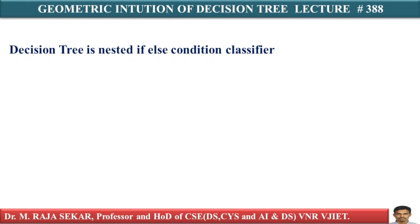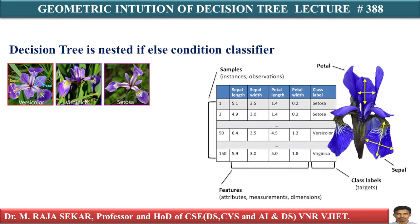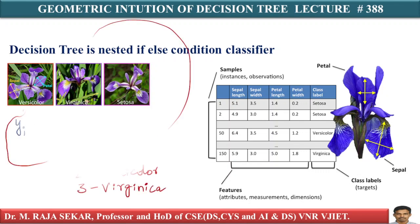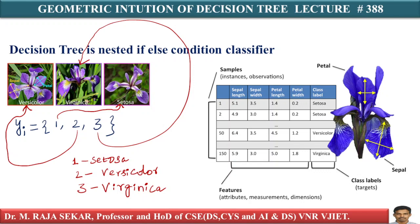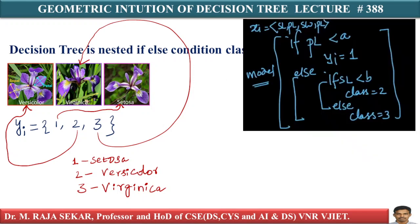Of course, there is a geometric interpretation to a decision tree. Let's take an example using the iris dataset. In the iris dataset, there are three classes: y could be one, two, or three — one means setosa flower, two means versicolor, three means virginica. We had four features: sepal length, sepal width, petal length, and petal width.